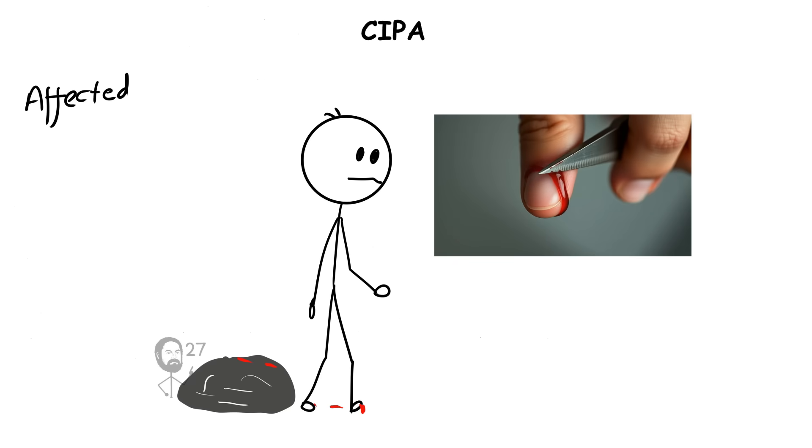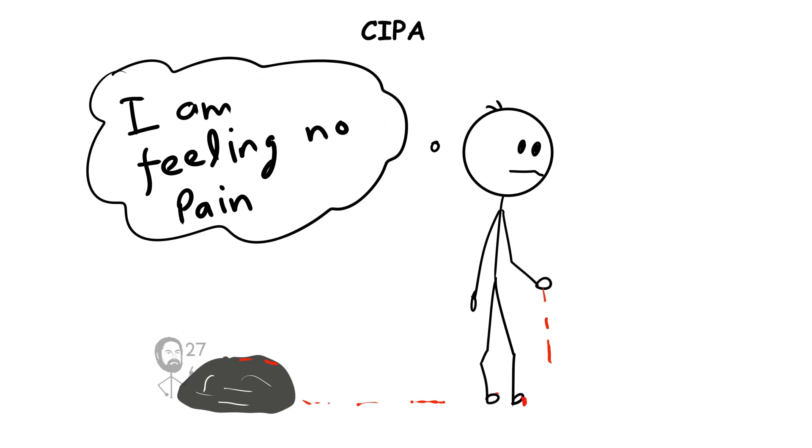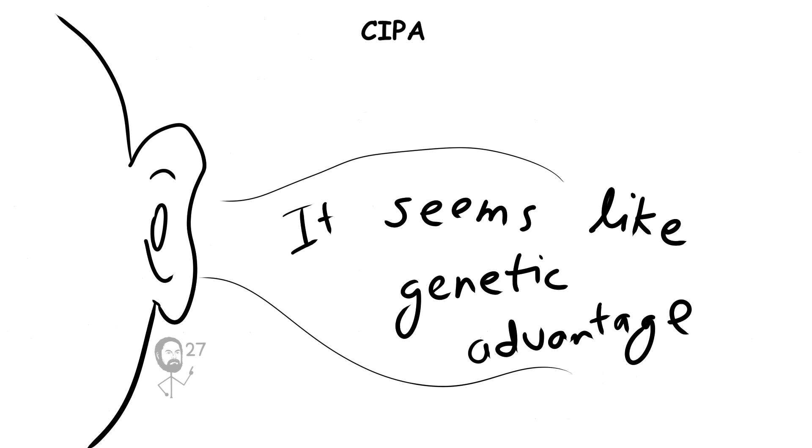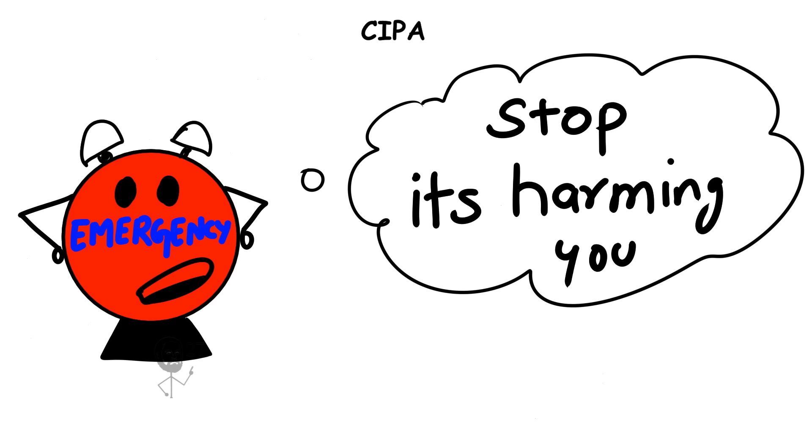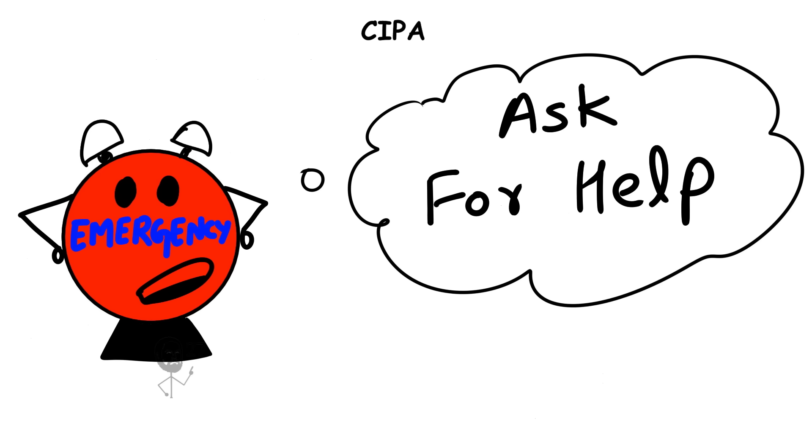For someone with CIPA, stubbing a toe, cutting a finger, or even breaking a bone might go completely unnoticed. While this may sound like a genetic advantage, it comes with serious risks. Pain functions as the body's alarm system, warning us to stop harmful activity or seek treatment.